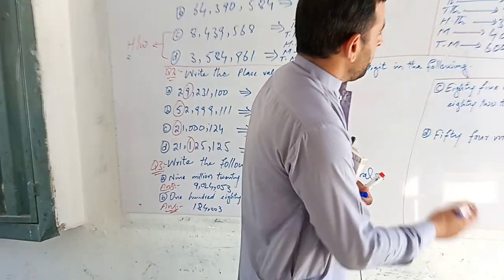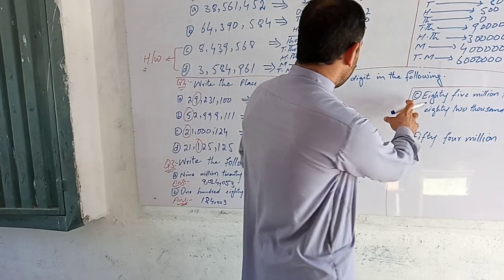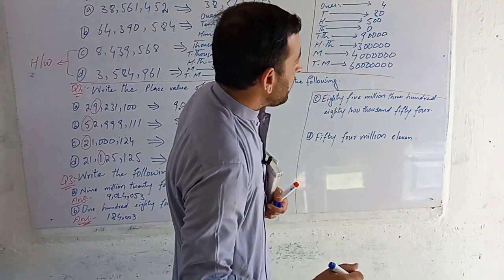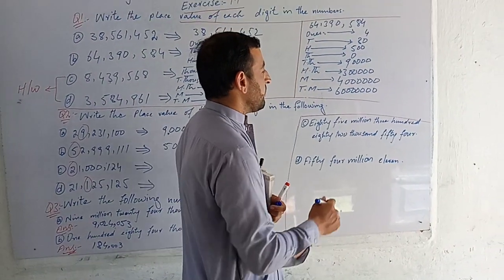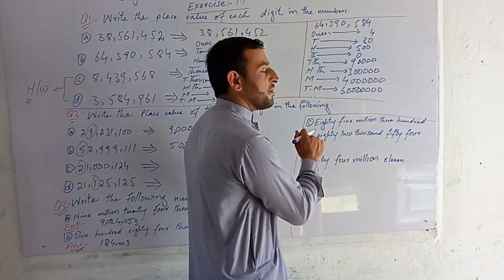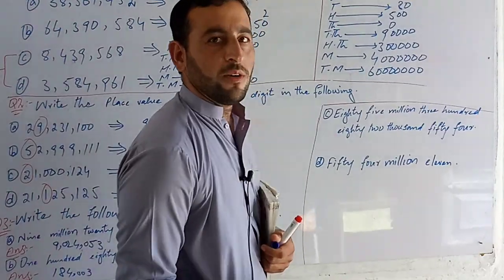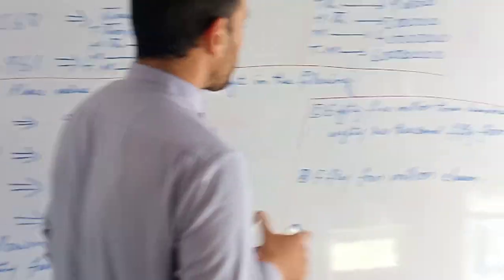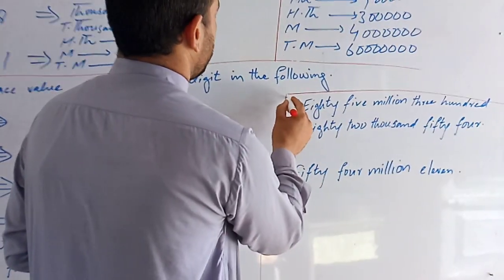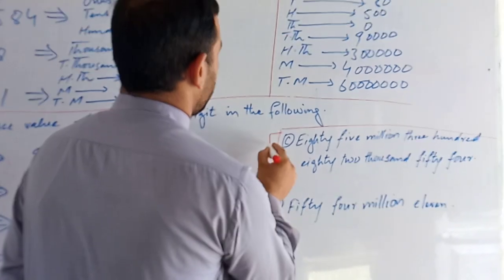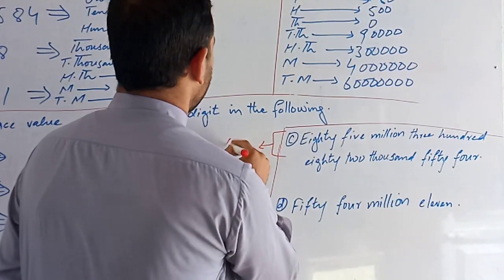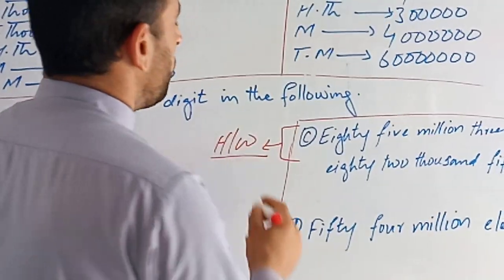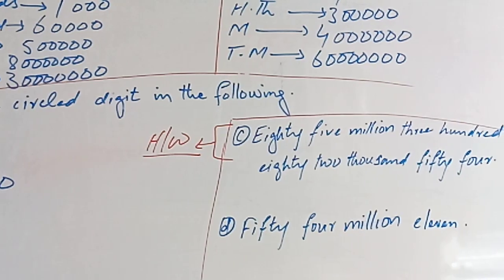We have to pay for 85,382,054. We have to pay for the home. Now let us pay for the home. That's the first time.